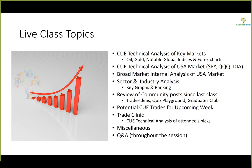As usual, we will look at key technical analysis of some key markets including oil, gold, global indices, and a few forex symbols. Then we will move to the US market and look at SPY, QQQ, and DIA, before going into broad market sector and industry analysis using graphs, heat map, and ranking table. We will review new topics posted in Trade Ideas or the Graduates Club, and look into possible trades for the coming week. Q&A is throughout the session.